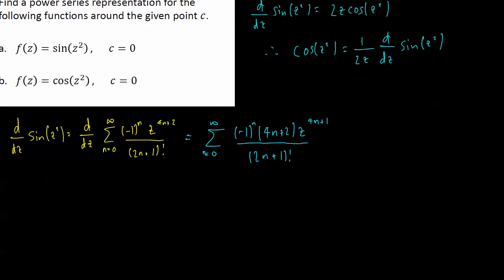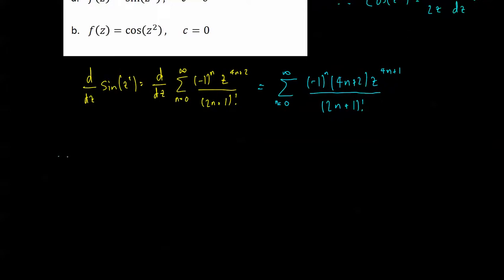I haven't quite finished though, I need to multiply this thing by 1 over 2z. So therefore, 1 over 2z times d/dz sin(z²) is equal to 1 over 2z of this power series to infinity, I'll just write it out again, z to the... oops, missed out on the 4n+2 there, z^(4n+1) over (2n+1) factorial.